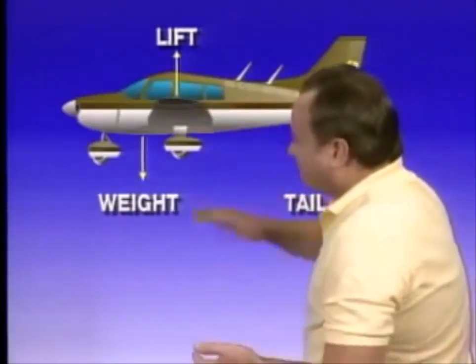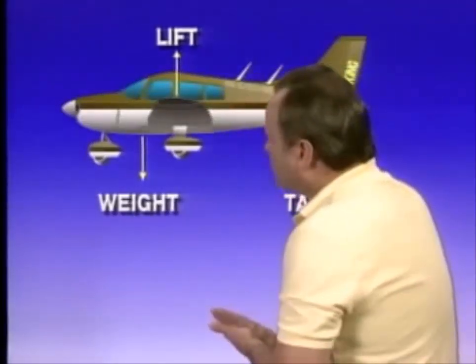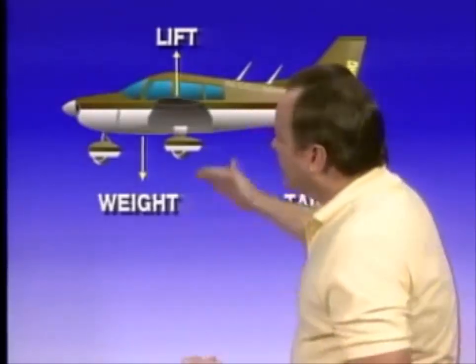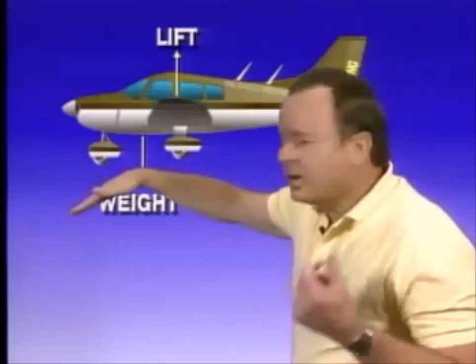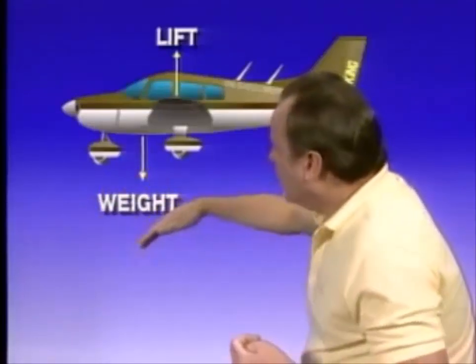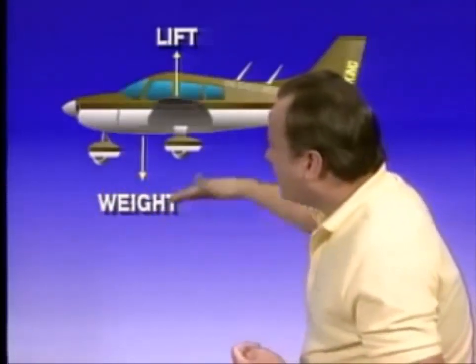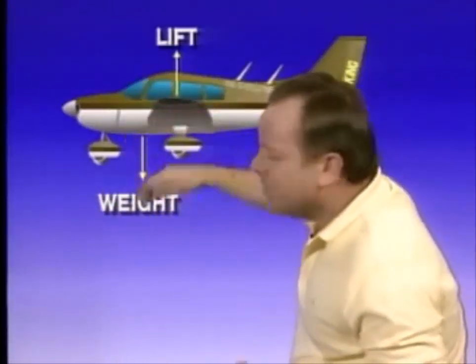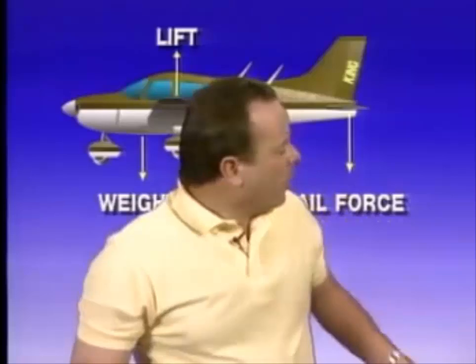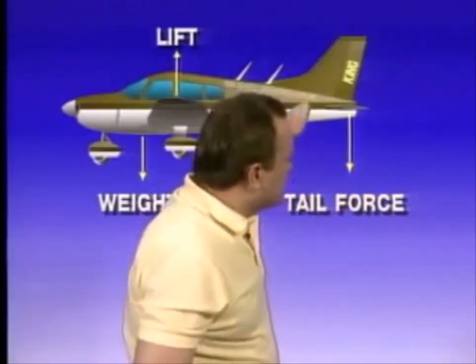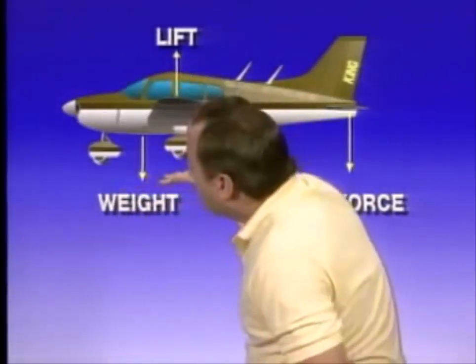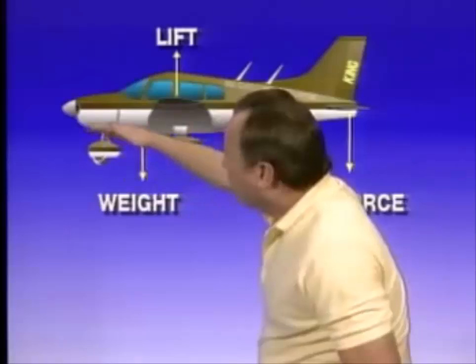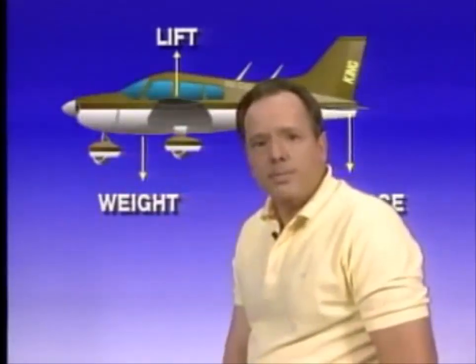Let's assume you're flying along and for some reason the airplane gets disturbed by an air current — the nose goes down, the airplane dives and picks up speed. What's going to happen as the airplane picks up speed? There'll be more down force on the tail, the tail will come down, the nose will come up, and the airplane will return to its original position.